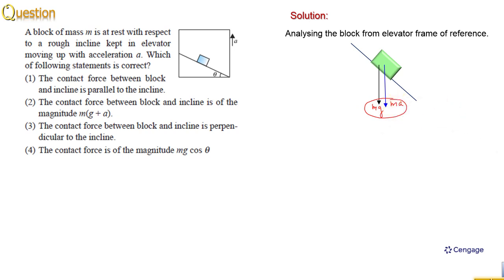We can make the component of mg plus A parallel to the incline and perpendicular to the incline. This is the component mg plus A sin theta and mg plus A cos theta.